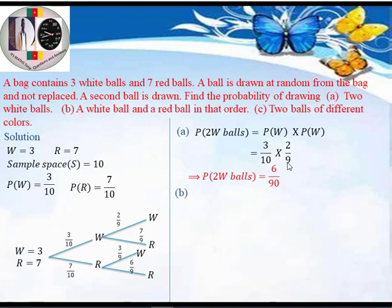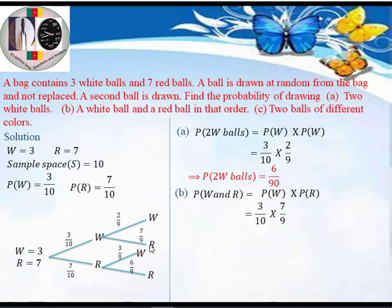Question (b) asks for the probability of drawing a white ball and then a red ball in that order — the first ball must be white and the second must be red. So P(W then R) = P(first white) × P(second red) = 3/10 × 7/9. Multiplying gives 21/90.